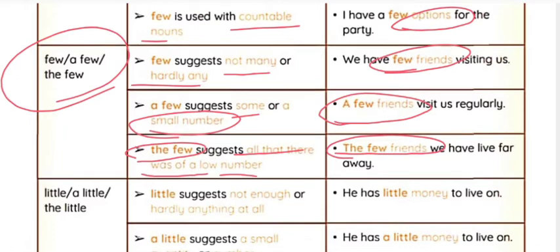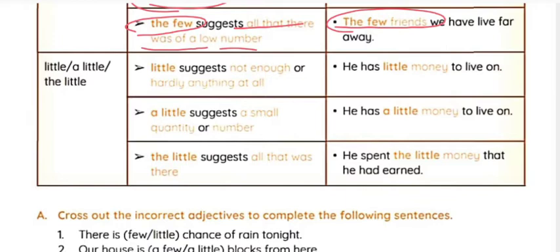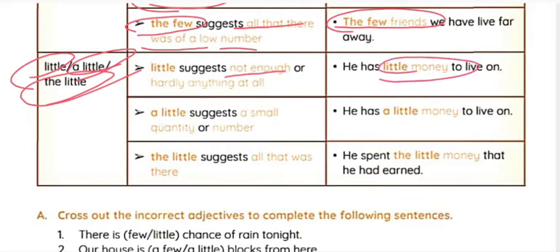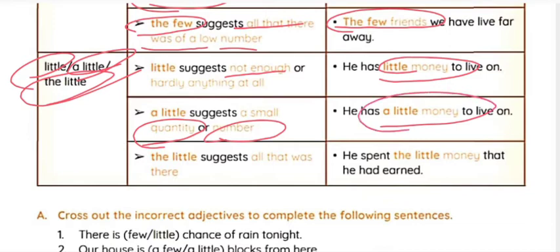Similarly, little, a little, and the little have differences. 'Little' suggests not enough — 'he has little money' means it is not enough. 'A little' suggests a small quantity — 'he has a little money' means a small quantity of money. 'The little' suggests all that there was — 'he spent the little money that he had earned,' meaning whatever money he had, he spent.